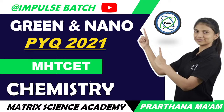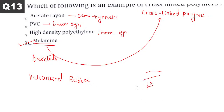Now green and nano chemistry. Out of 13 questions, how many are correct? After highlighting answers, tick them. Don't just highlight options — read them and check if you knew the answer directly. Good — 12 out of 13. Those who got all correct, great. More than 10 correct is also okay.